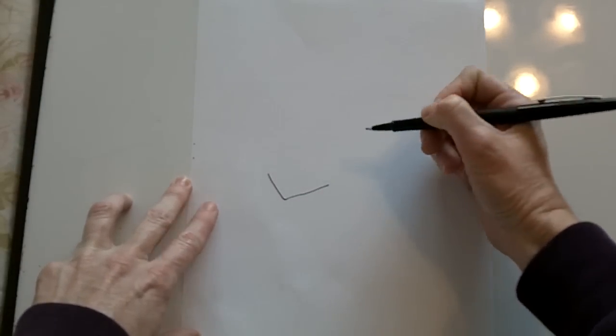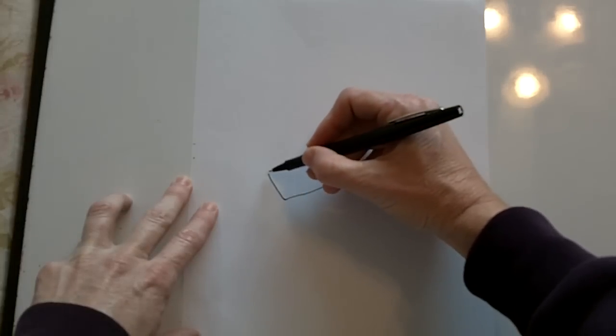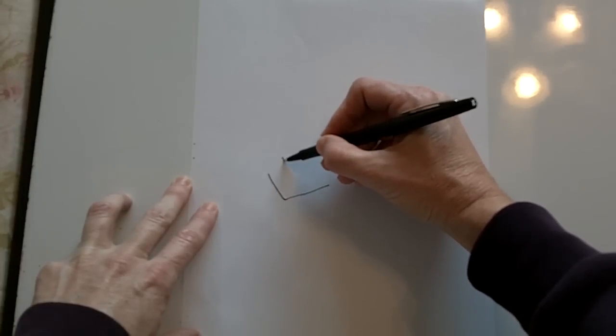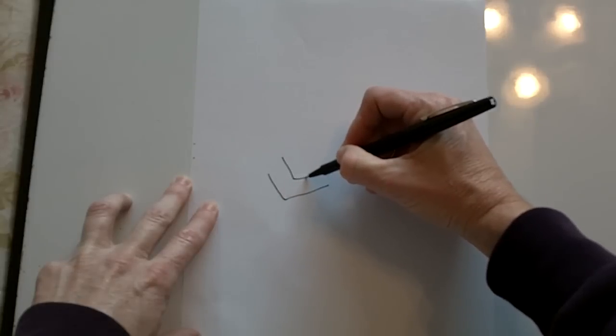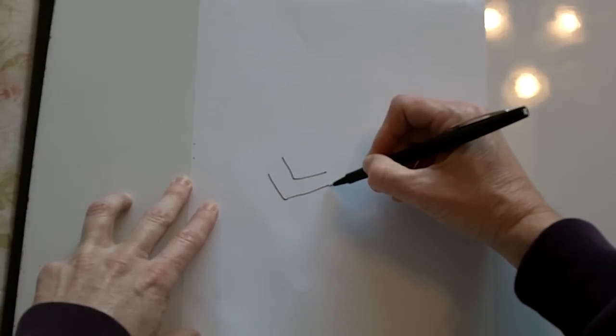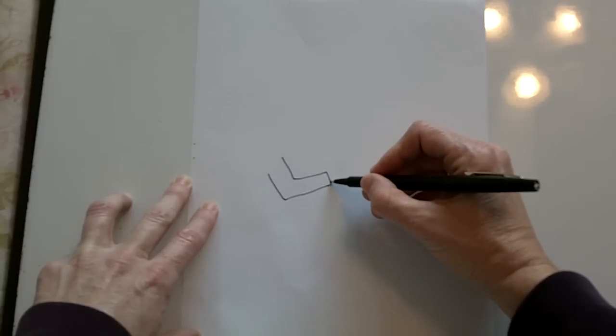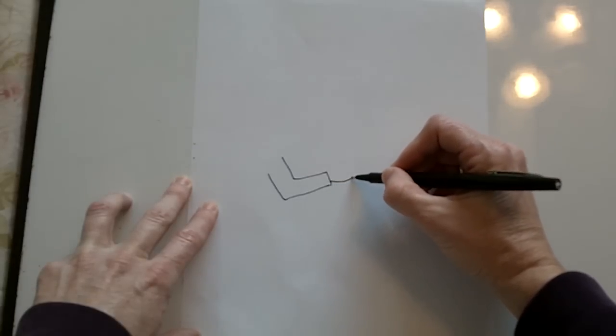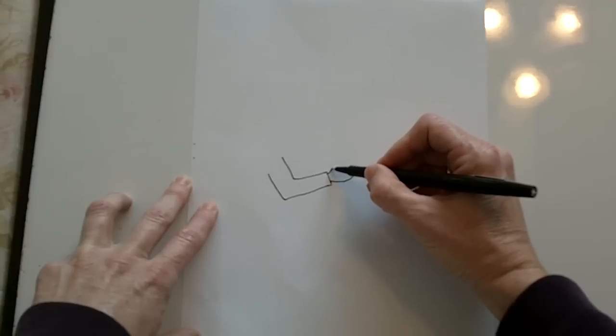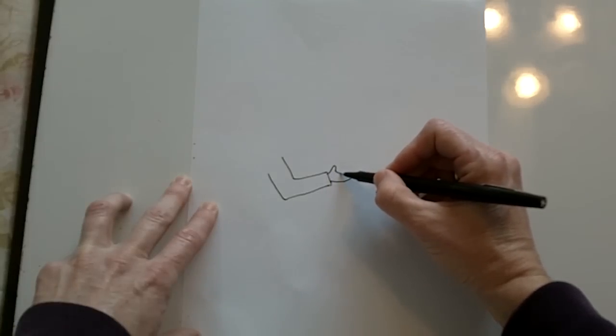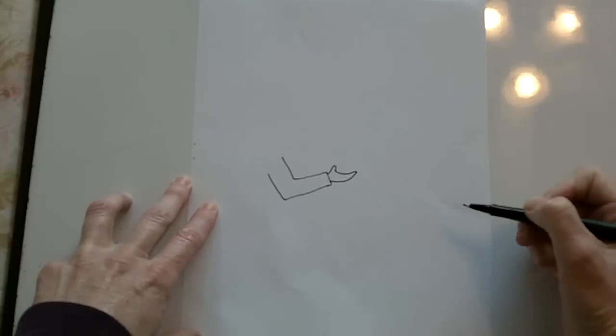It goes like that and then up a little higher. From here draw arm like that and then a curved line here for the hand. There's a thumb and then this curves like that.